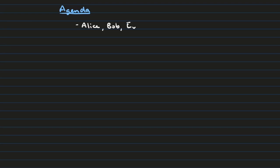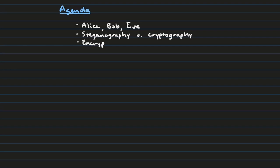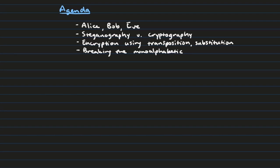On today's agenda, we have the following subjects. First, we're going to discuss the three most important people in encryption: Alice, Bob, and Eve, and illustrate how they are pivotal in the design of modern-day encryption systems. Next, we're going to look at the differences between steganography and cryptography. After that, we're going to look at two forms of encryption known as transposition and substitution. And finally, we're going to look at how we break the monoalphabetic substitution cipher, which is our first introduction into cryptanalysis.